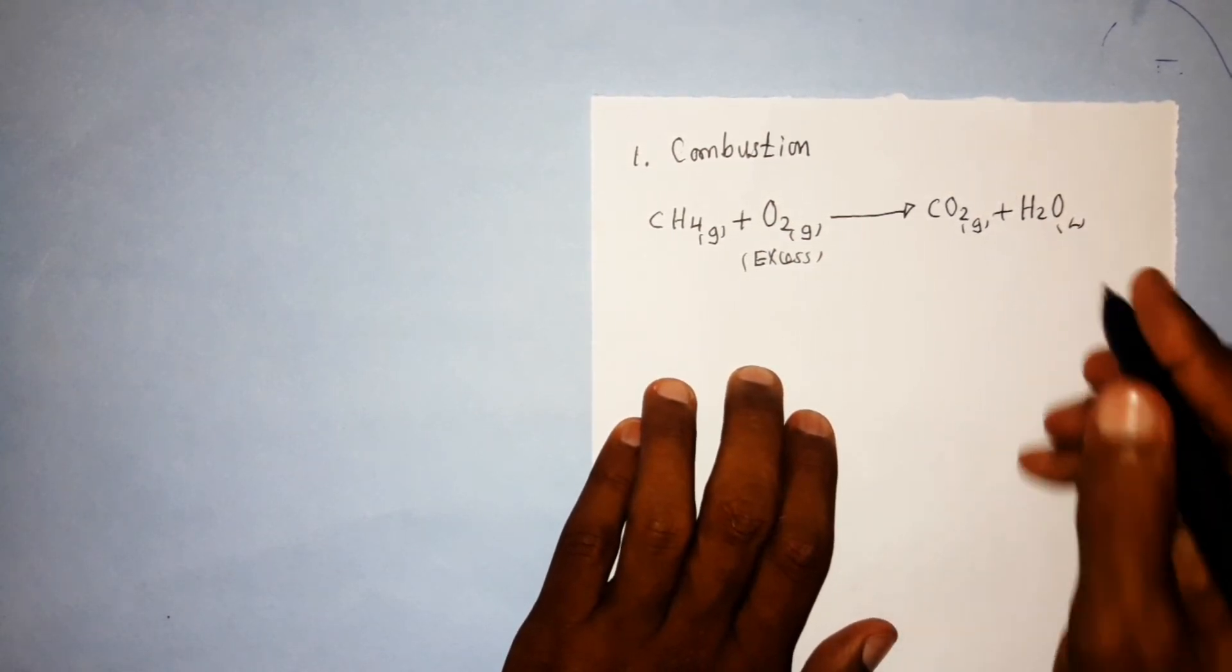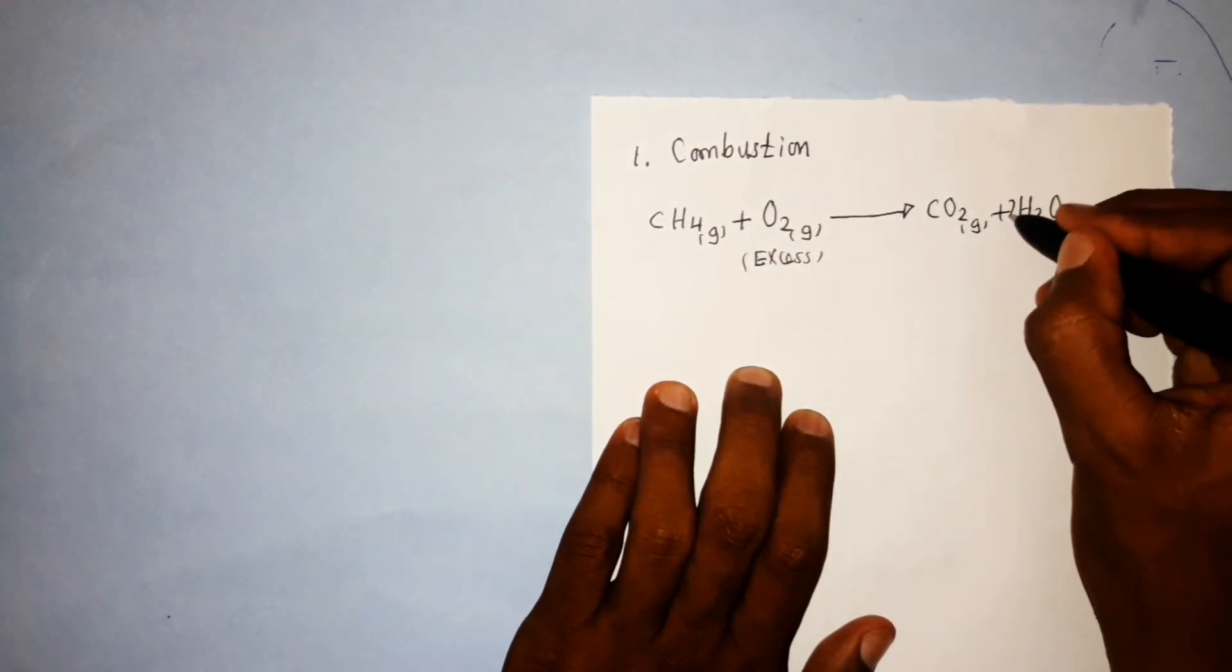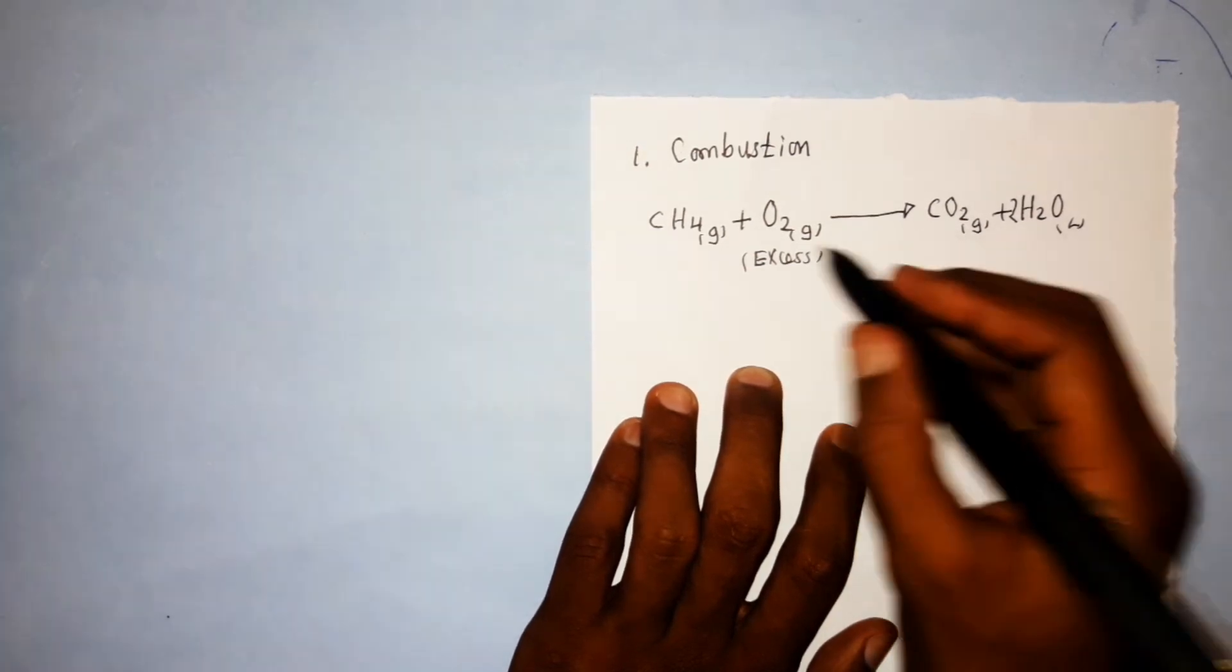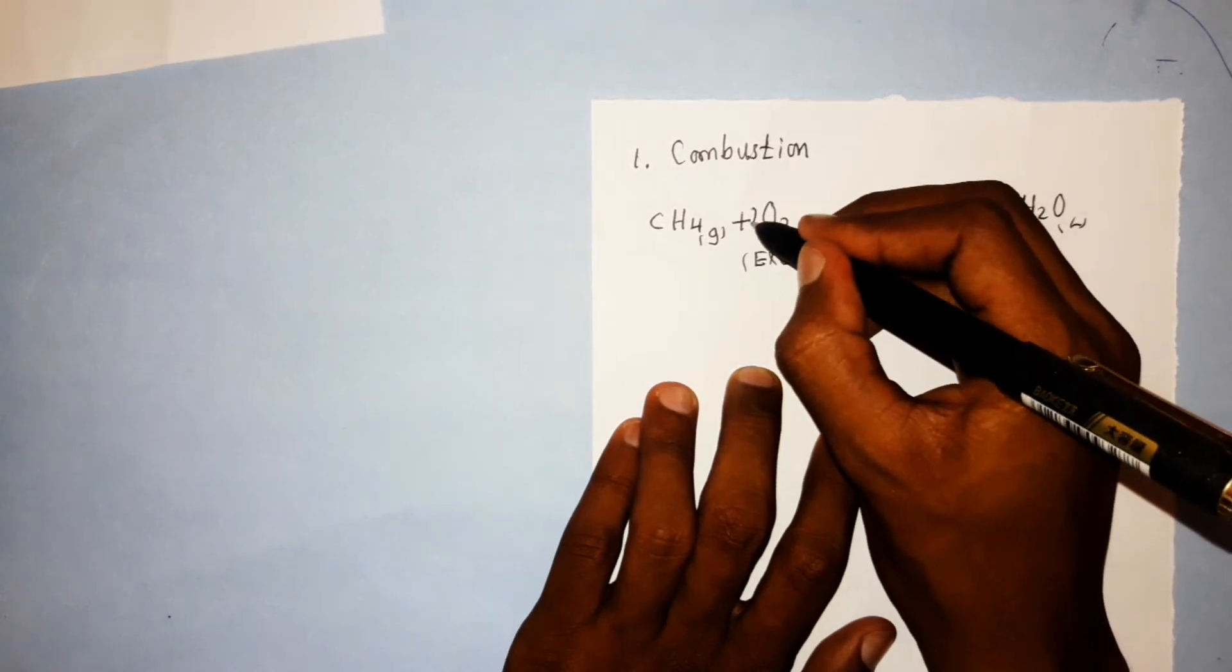To balance the equation, here you have two hydrogen atoms, and here you have four hydrogen atoms. Therefore, here you place two. And then, the number of oxygen atoms here is two, while here is four. Therefore, here you place two.